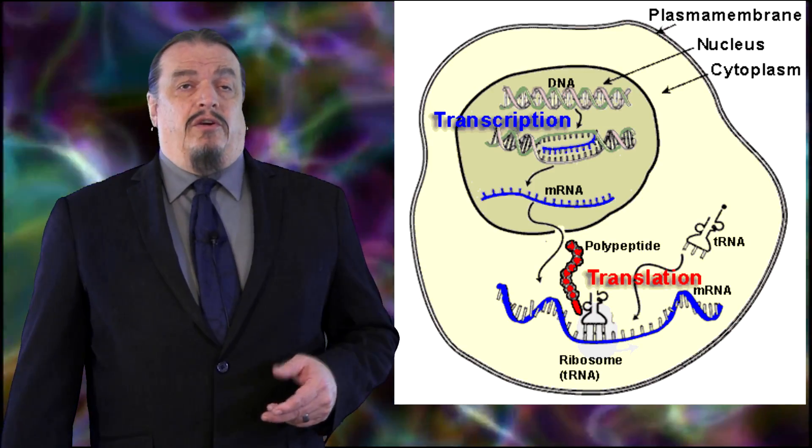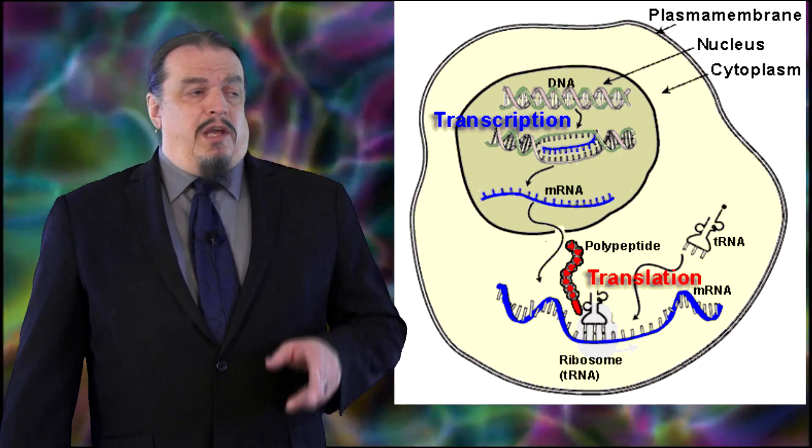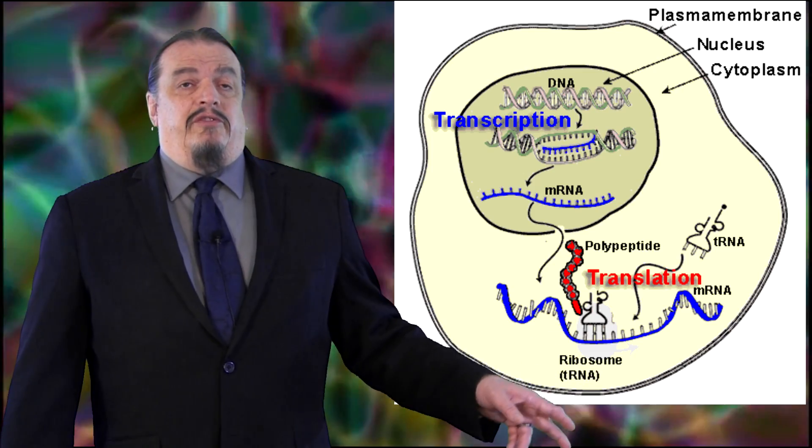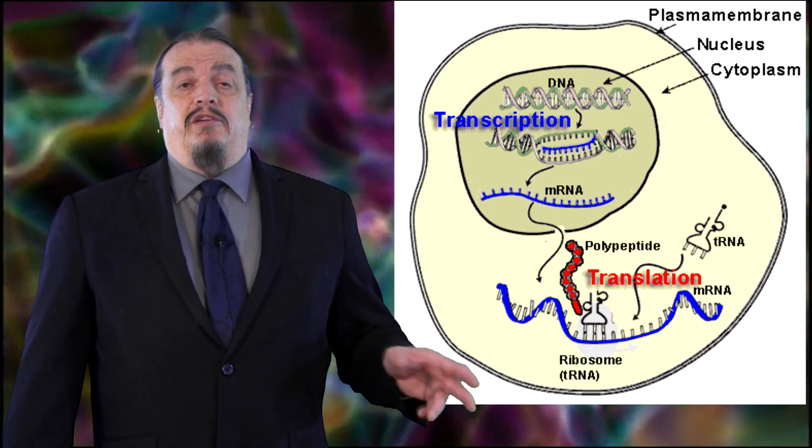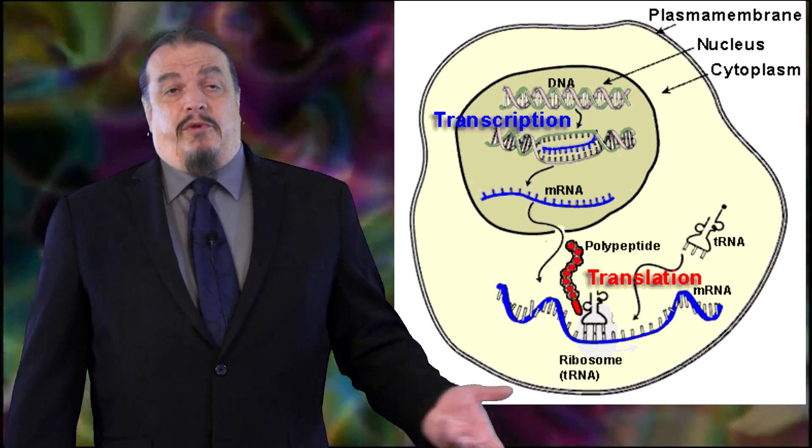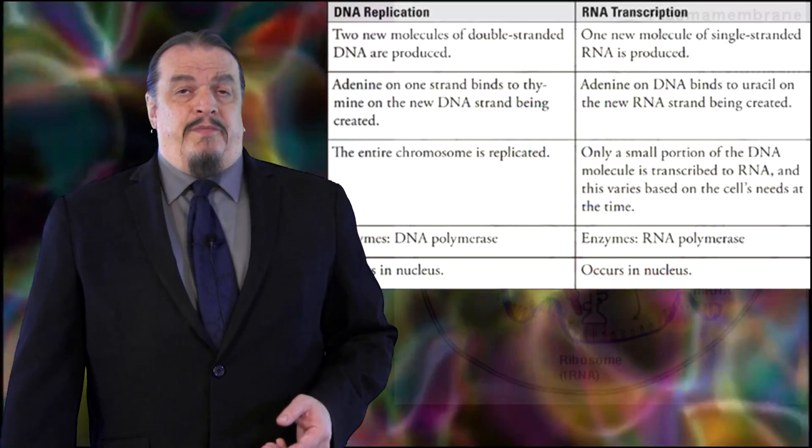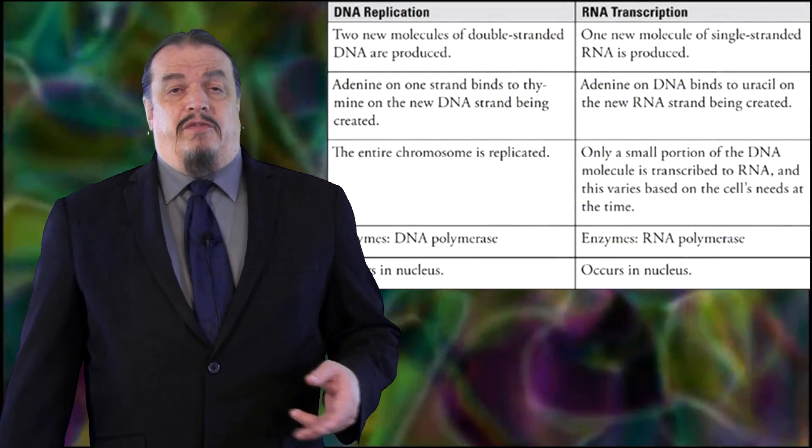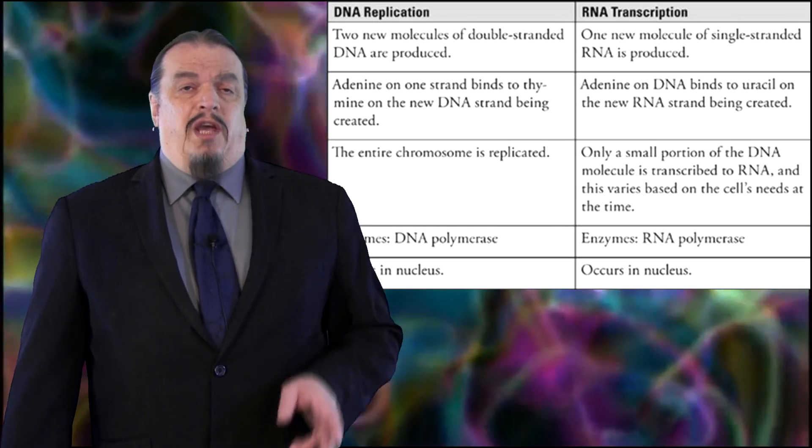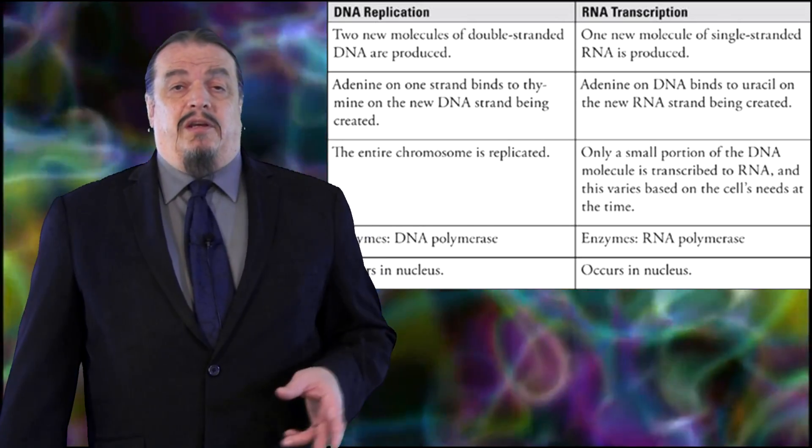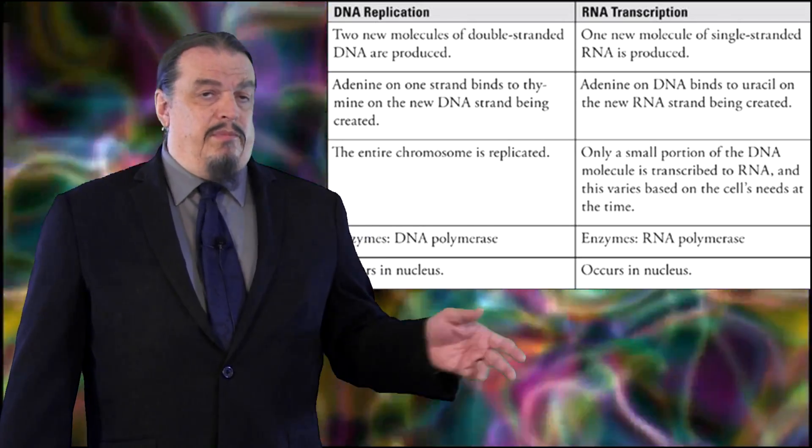Your DNA contains a genetic code or recipe for your proteins, but your DNA doesn't leave the nucleus, so a copy of those instructions need to be made inside the nucleus before they can be taken outside for assembly. If you remember DNA replication from our meiosis and mitosis videos, making a copy or transcribing a copy of the genetic code is similar but different.